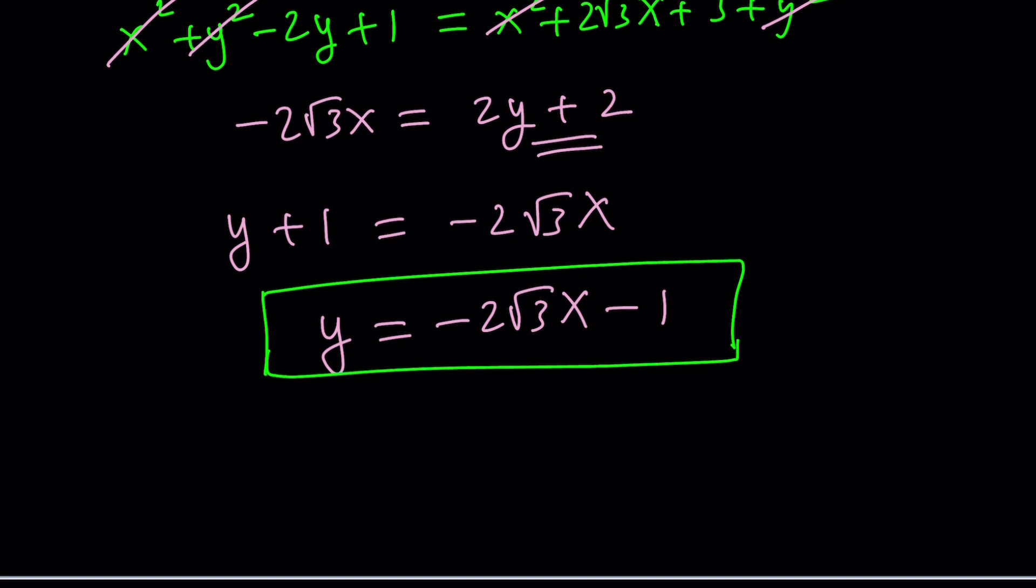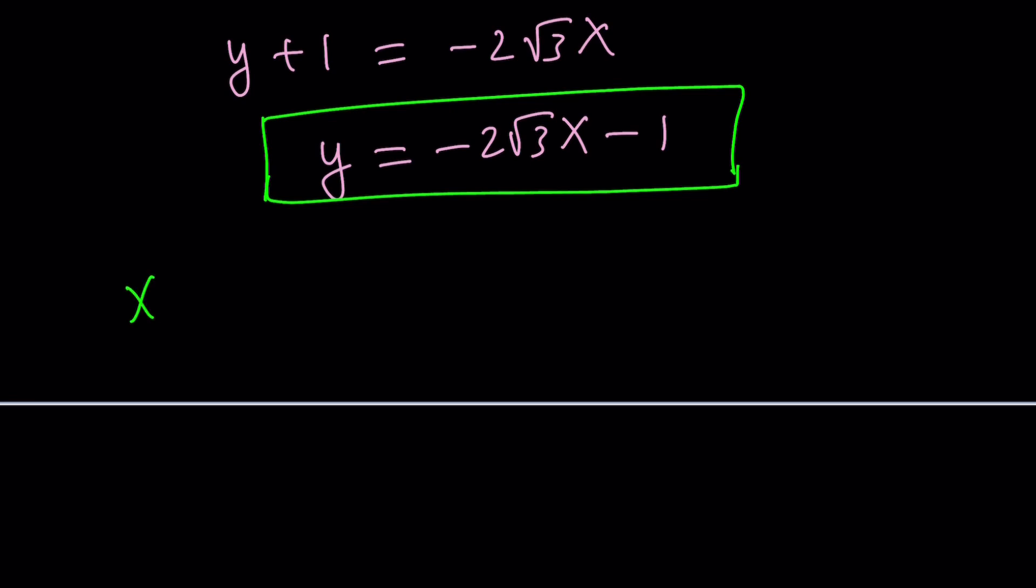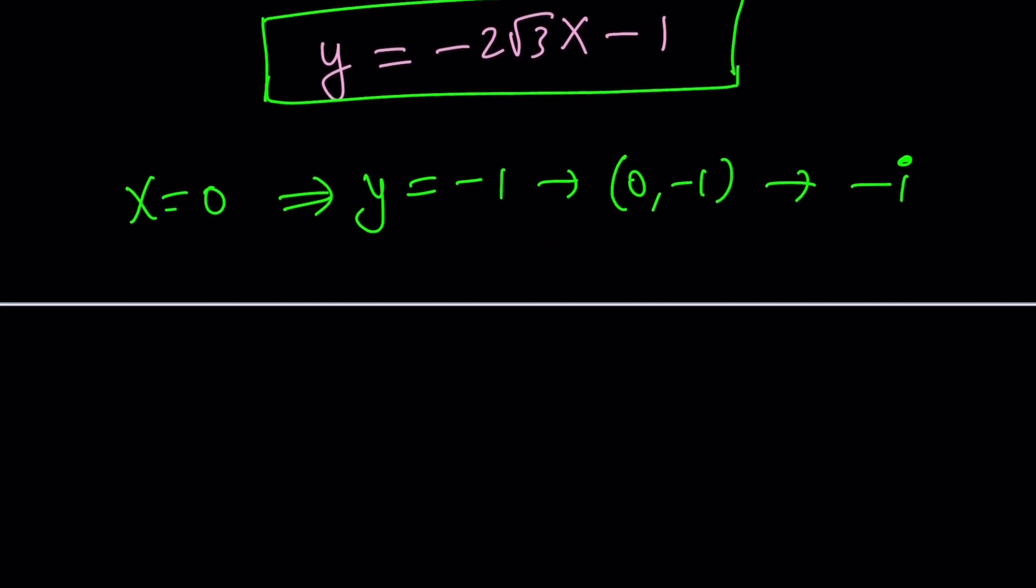In other words, complex numbers that satisfy the original absolute value equation will also satisfy this equation, which means that those are going to be on a straight line. I don't mean necessarily all the complex numbers, but the x and y values are related linearly. Notice that this is a linear function. This means that, for example, if x is equal to 0, then y is equal to negative 1. This represents 0, negative 1 or just negative i in the argand plane. In other words, negative i is going to satisfy the original absolute value equation, which was the absolute value of z minus i equals the absolute value of z plus root 3.